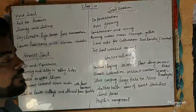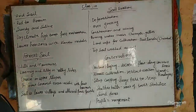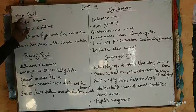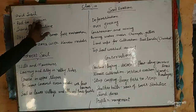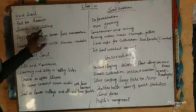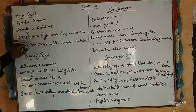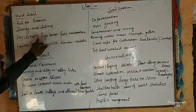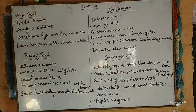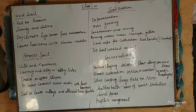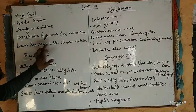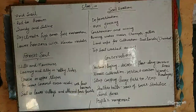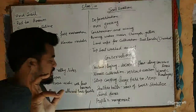Let's discuss these points in a short recap. Arid soil: red to brown in color, sandy, saline, dry climate with higher temperature and fast evaporation. Lower horizons have kankar nodules.